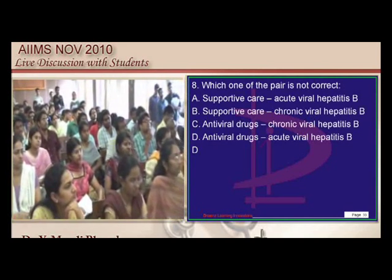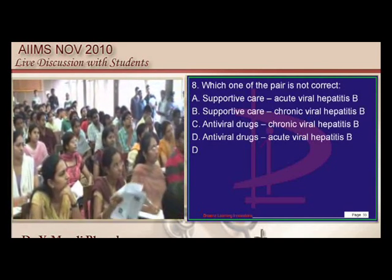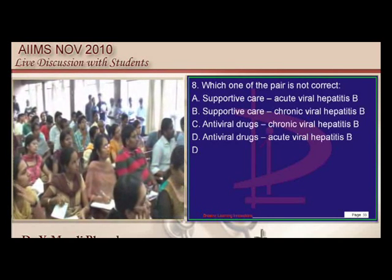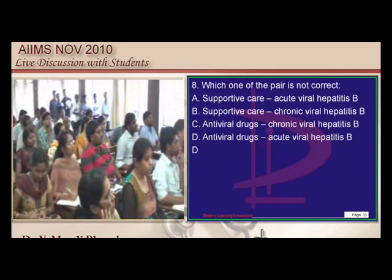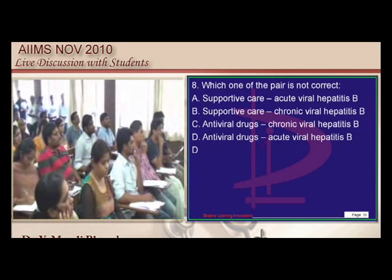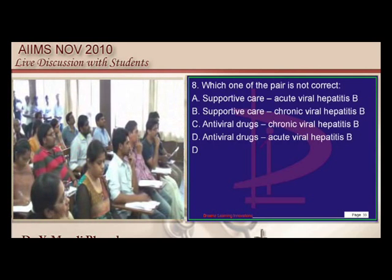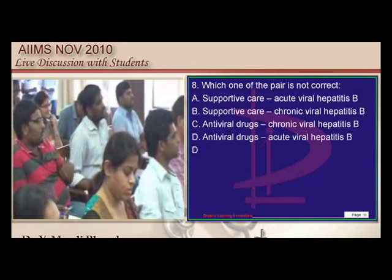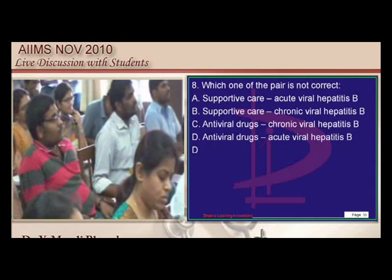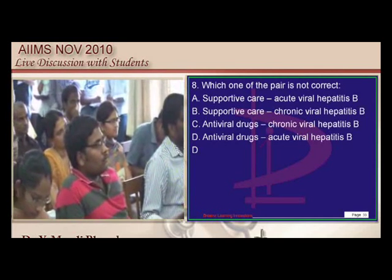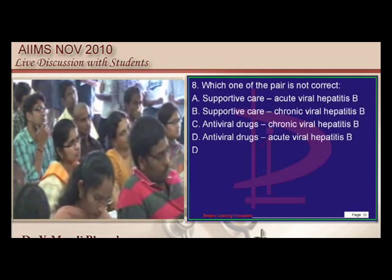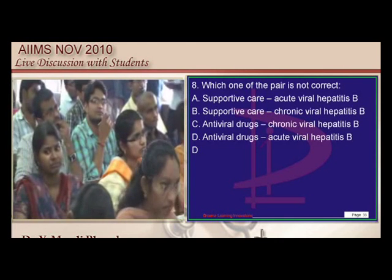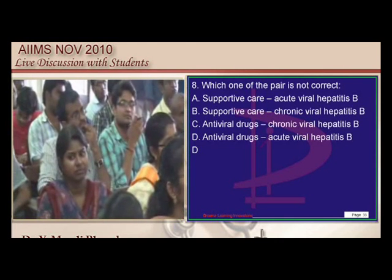When there is acute viral hepatitis, the main treatment is supportive. You do not give any antiviral drugs in acute viral hepatitis. But in chronic viral hepatitis, we give supportive care and also interferon, lamivudine, etc.